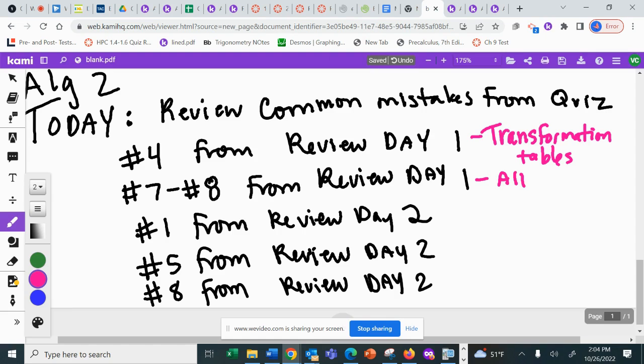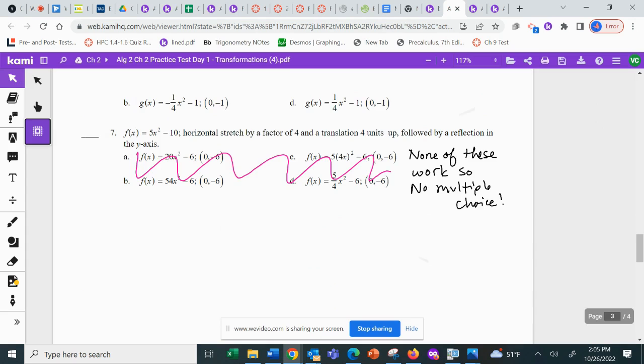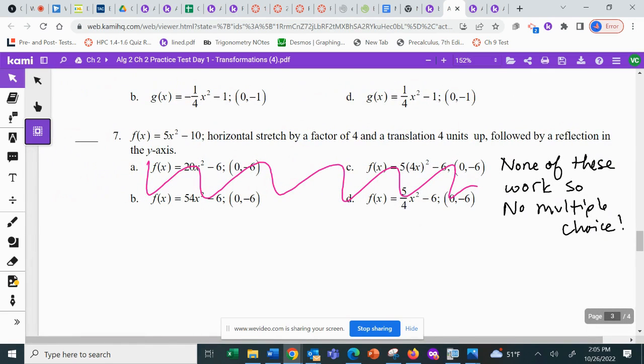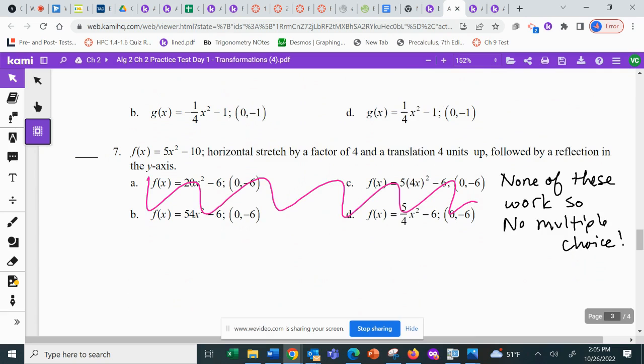Review day one, number seven and eight. I used some software and apparently their code was wrong. So number seven and eight, both of them, none of the ABCD work. If you sit there and try to figure it out, it's not going to work because none of those are the right answer. Seven and eight, you're just going to have to figure out on your own and check with my answer key. The computer software was messed up, so seven and eight, not multiple choice for you.